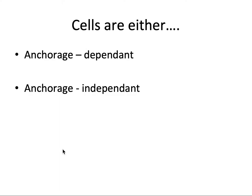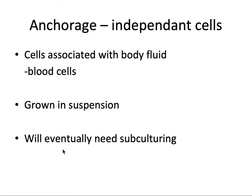There are two types of cells you can encounter: some are adherent or anchorage dependent — they attach to the flask itself — and other cells can be anchorage independent. Anchorage independent cells associated with body fluids can be blood cells; these cells are grown in suspension. These cells will also need subculturing — once they reach a certain number in the container, you have to reduce the number of cells through subculturing, otherwise if the cell number grows beyond a certain number they will start dying.